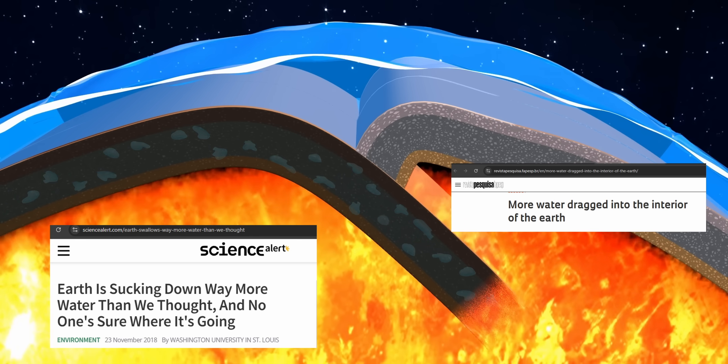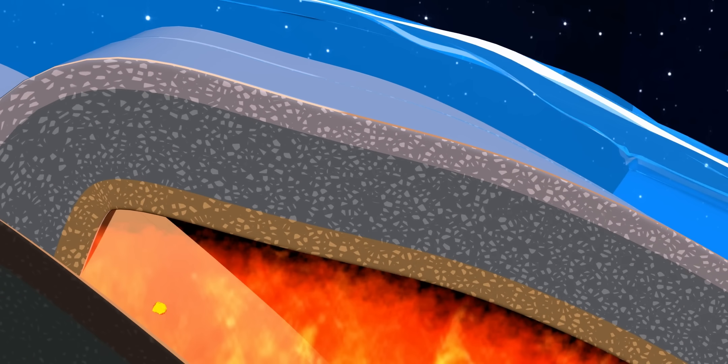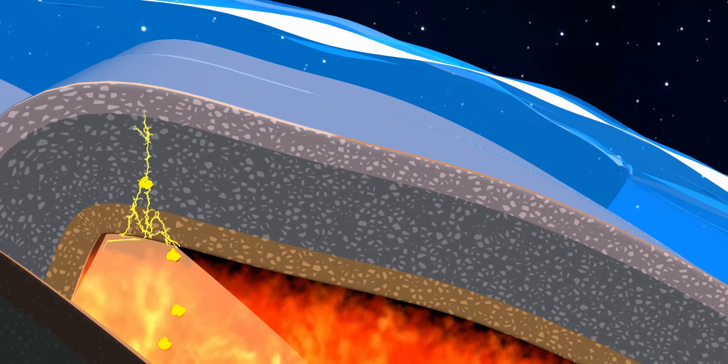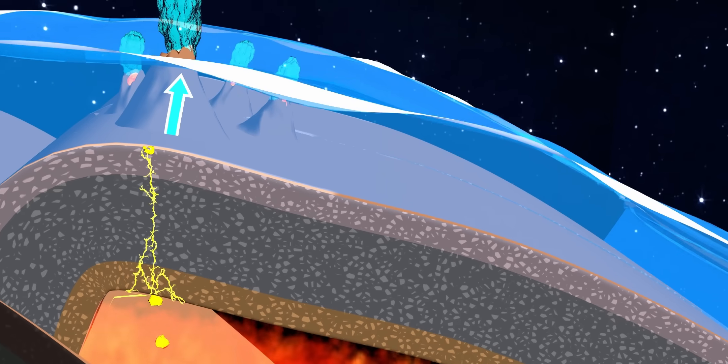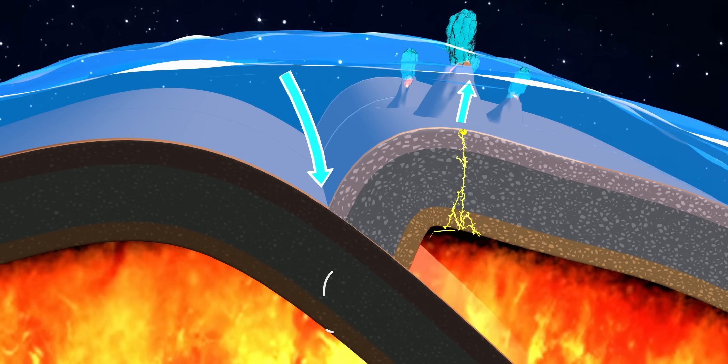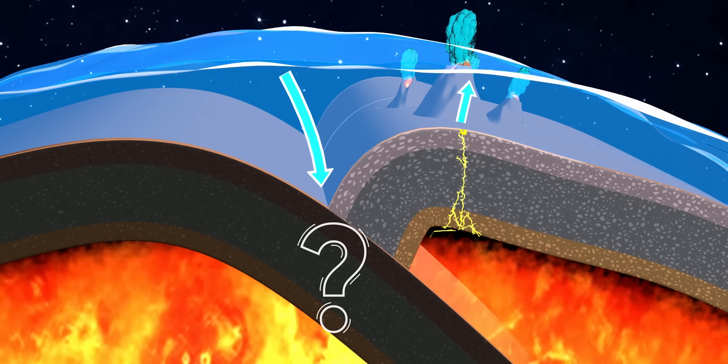This water should somehow reach the ocean back. Sea levels have remained relatively stable for a significant amount of time. The only option for this is volcanic eruptions. Here's the issue. Studies show the water coming out of volcanic eruptions is much lower than the water swallowed by the mantle. Where does the remaining water go?